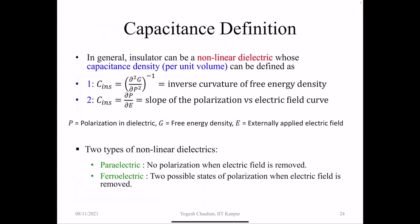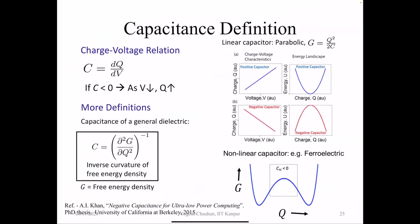Capacitance can be defined in terms of either inverse curvature of free energy density or the slope of the polarization versus electric field curve. There are two types of dielectrics: paraelectric, where there is no polarization when the electric field is removed, and ferroelectric, where there are two possible states of polarization when the electric field is removed. A positive capacitor has a normal charge-voltage relation — an upward parabola in energy versus charge. A negative capacitance gives an inverted parabola, and such characteristics exist in ferroelectric materials.